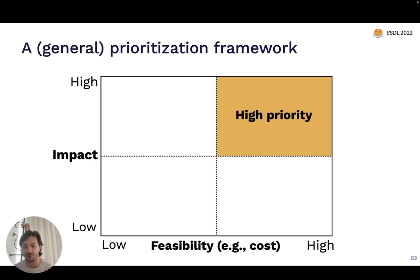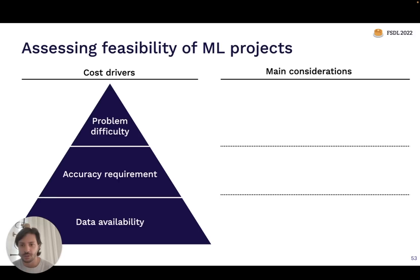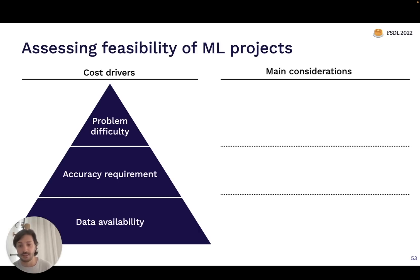Coming back to our prioritization framework — we talked about mental models for high-impact ML projects. Now let's talk about how to assess the cost of a machine learning project. The way I like to think about it, there are three main drivers for how much a project is going to cost. The first and most important is data availability: how easy is it to get the data you'll need? The second most important is the accuracy requirement for the problem. And also important is the intrinsic difficulty of the problem you're trying to solve.